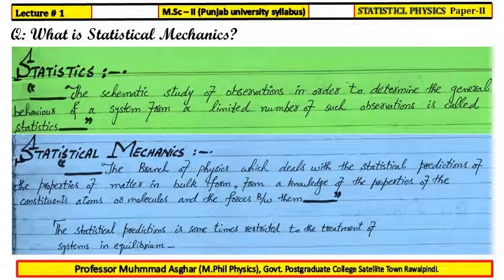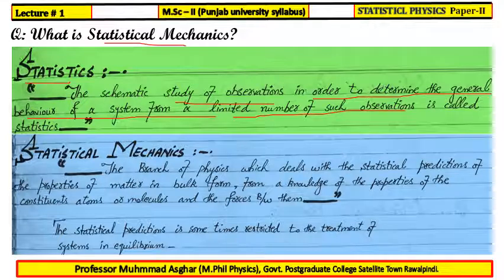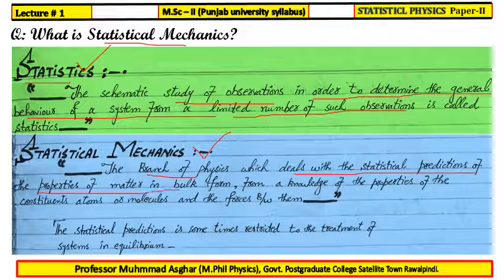Now, before defining statistical mechanics, I will start from what is meant by statistics. Statistics means it is the systematic study of observations in order to determine the general behavior of systems from a limited number of such observations — that is called statistics. Knowing this definition of statistics, we can define statistical mechanics as the branch of physics that deals with the statistical predictions of the properties of matter in bulk form.